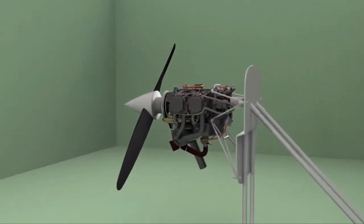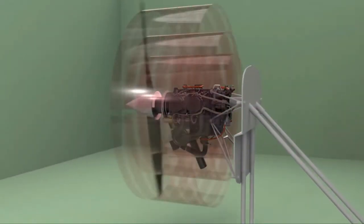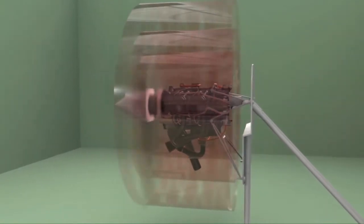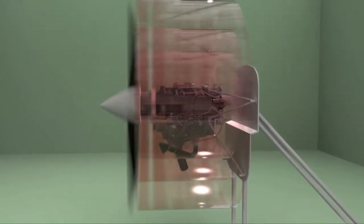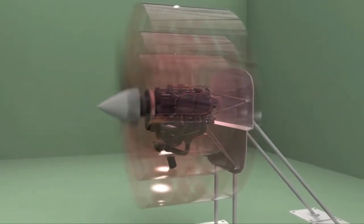The propeller or rotor mounted on the front of the engine translates the rotating force of the engine into thrust, a forward-acting force that helps move the airplane through the air. A propeller or rotor is a rotating airfoil that produces thrust through aerodynamic action.